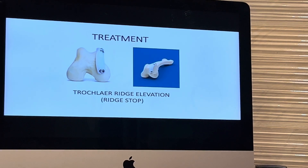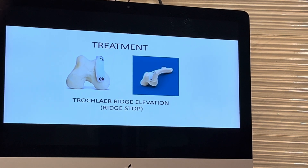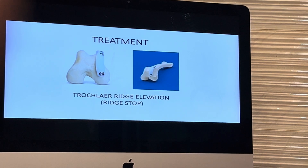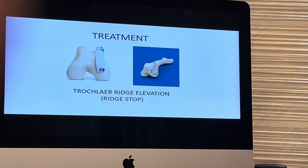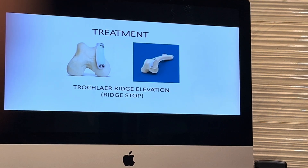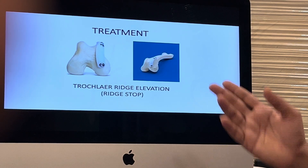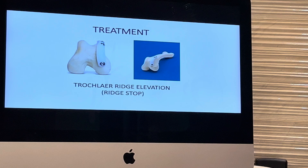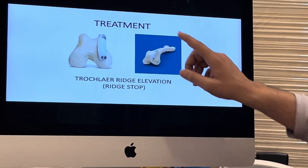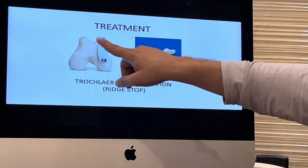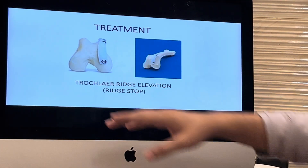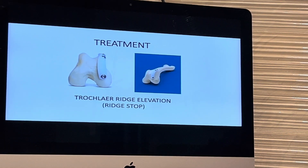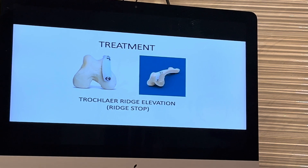There is one more treatment, a newer version: trochlear ridge elevation. Instead of deepening the groove when there is a shallow trochlea, we elevate the ridges. We place a synthetic material and three screws, so the trochlea is deepened and the patella never luxates. These are the various treatment protocols employed for patellar luxation correction.